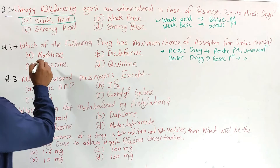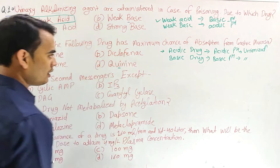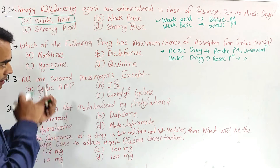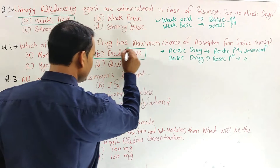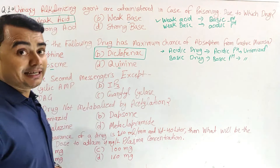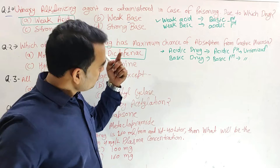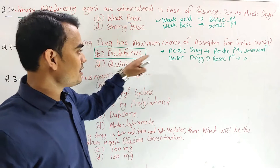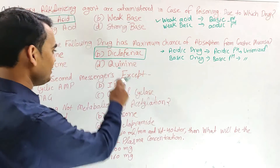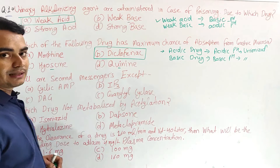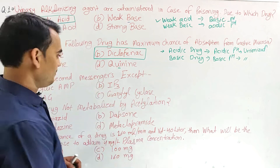The options are morphine, hyoscine, diclofenac, and quinine. Diclofenac is a propionic acid derivative, so it has an acidic nature. Therefore, this drug will be absorbed from the gastric mucosa very well. The other three drugs — morphine, hyoscine, and quinine — are basic in nature, so they will be absorbed from the intestine.